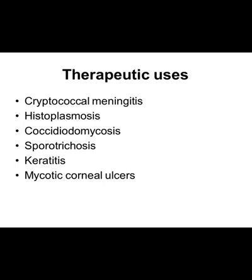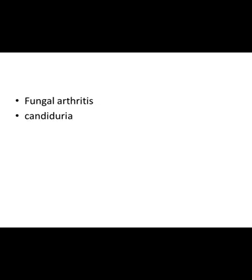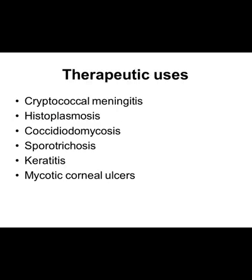The clinical uses of amphotericin B include cryptococcal meningitis caused by Cryptococcus neoformans, histoplasmosis caused by Histoplasma capsulatum, coccidioidomycosis, sporotrichosis (also called rose gardener's disease), keratitis and mycotic corneal ulcers, fungal arthritis, and candiduria. Histoplasmosis, sporotrichosis, and coccidioidomycosis primarily involve the lungs.